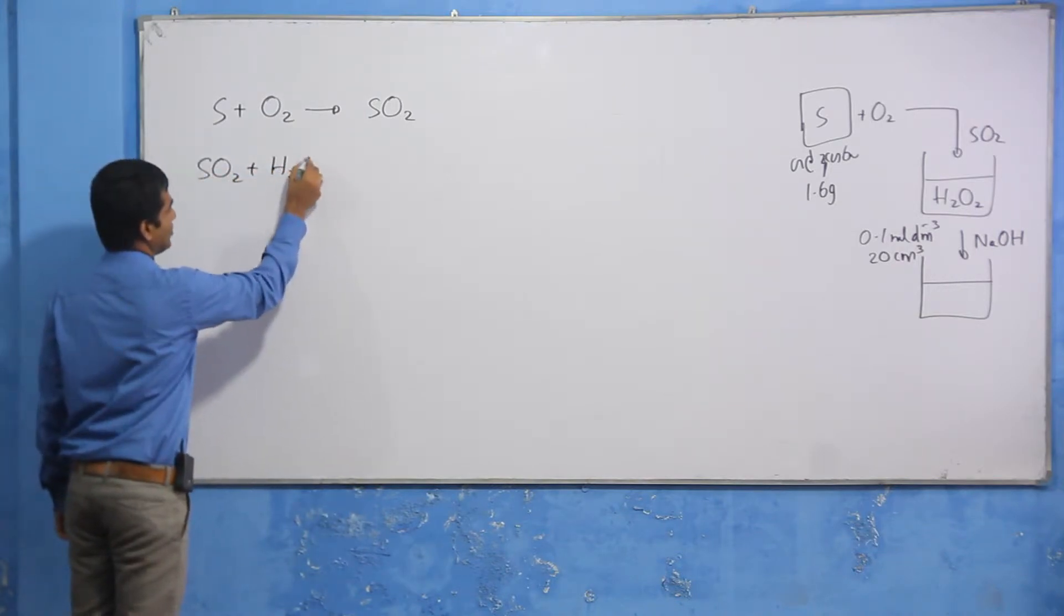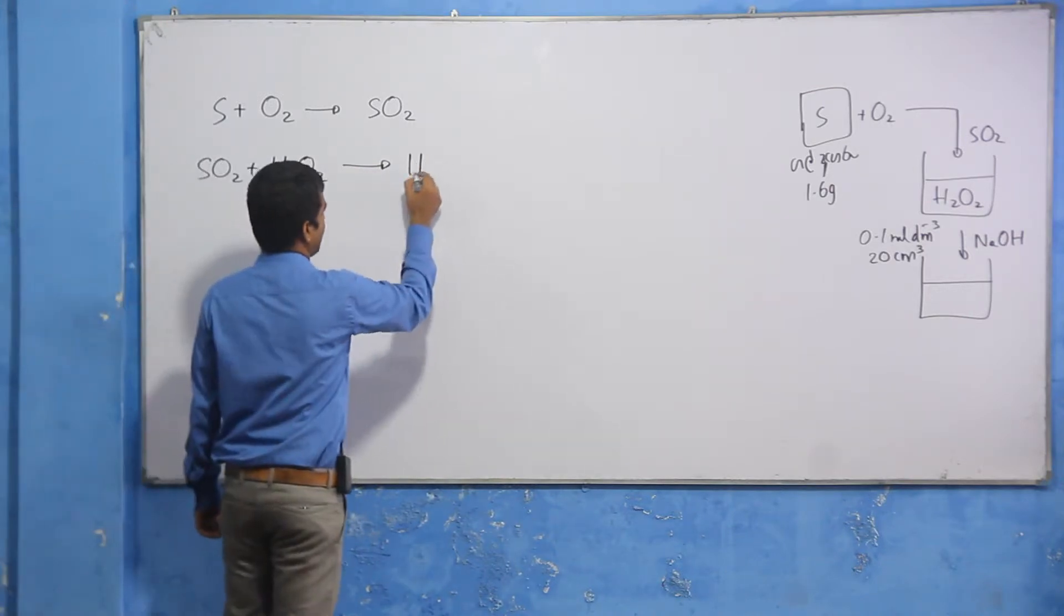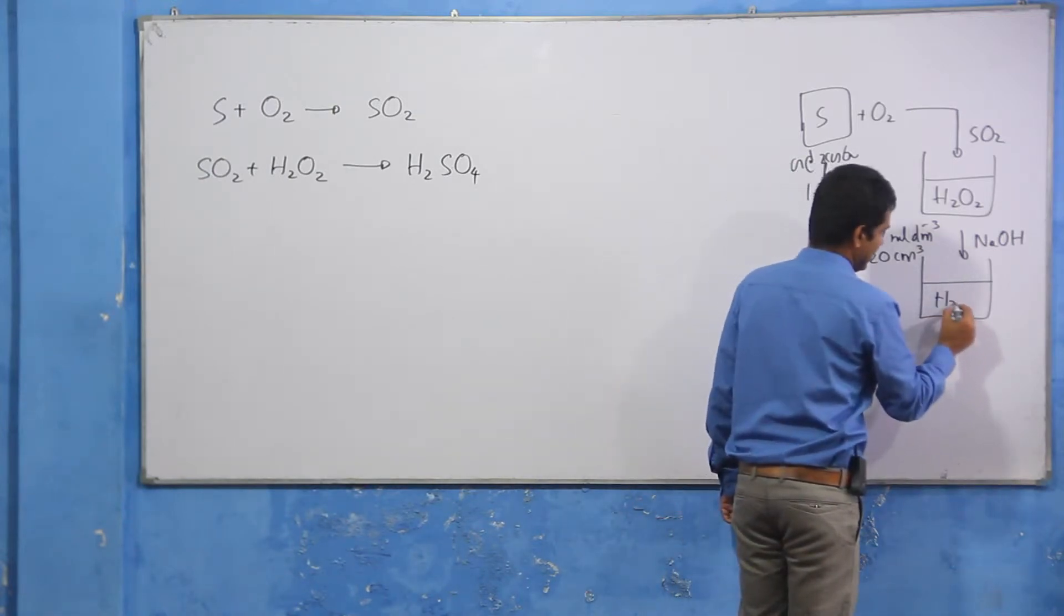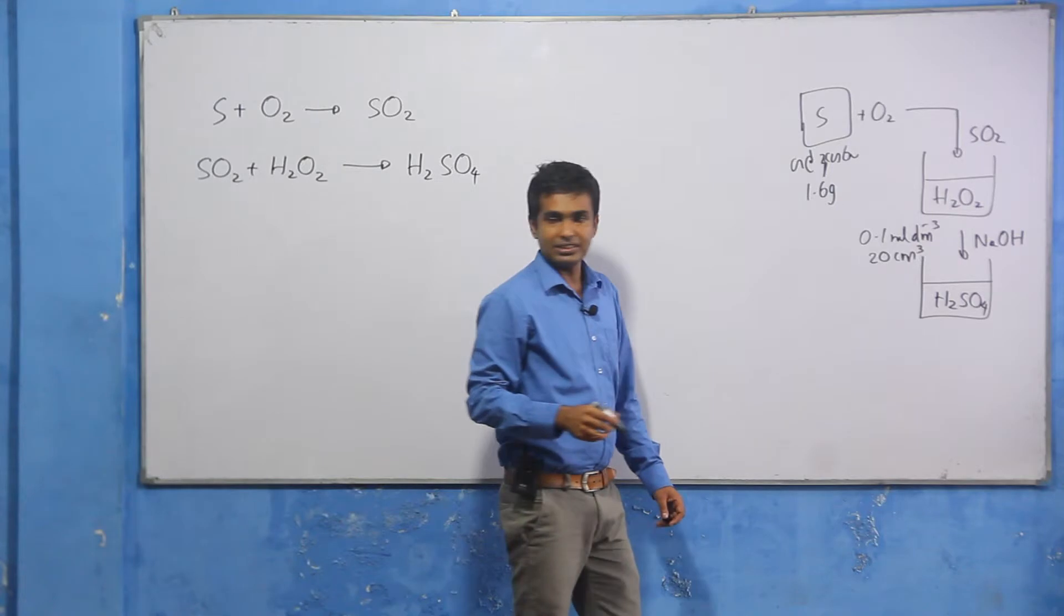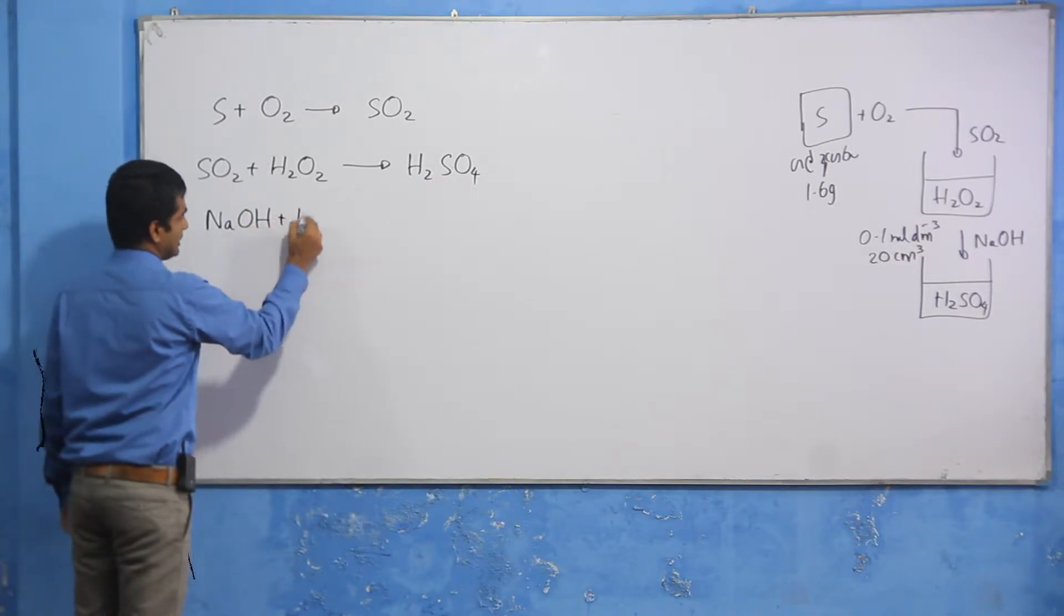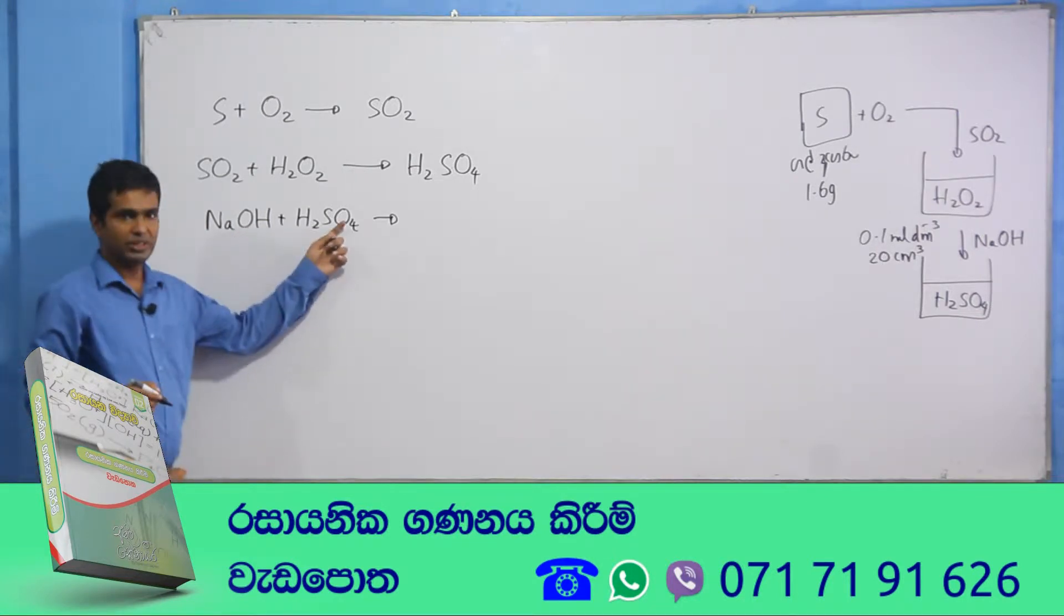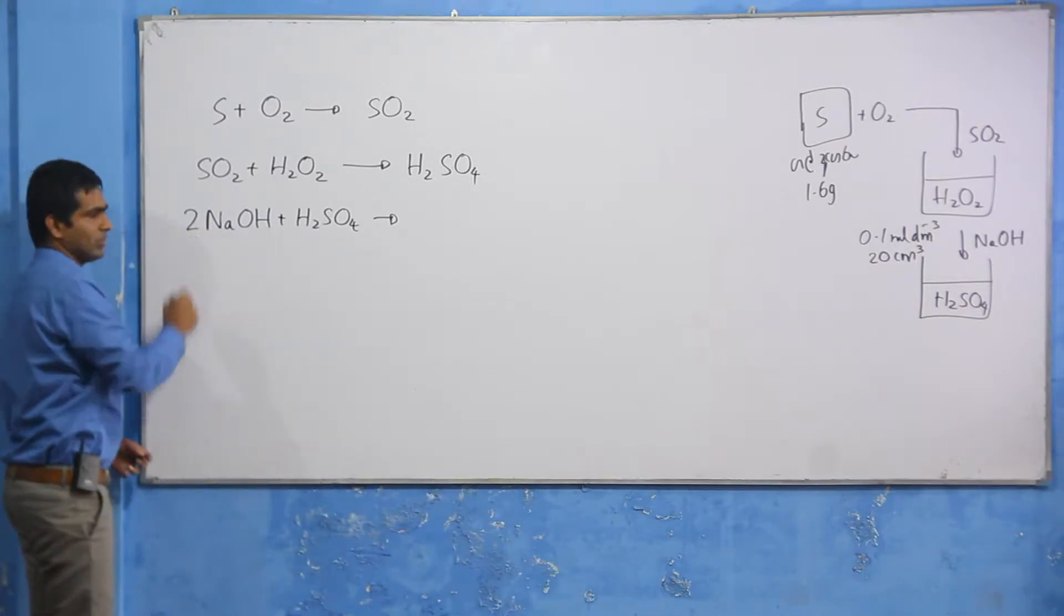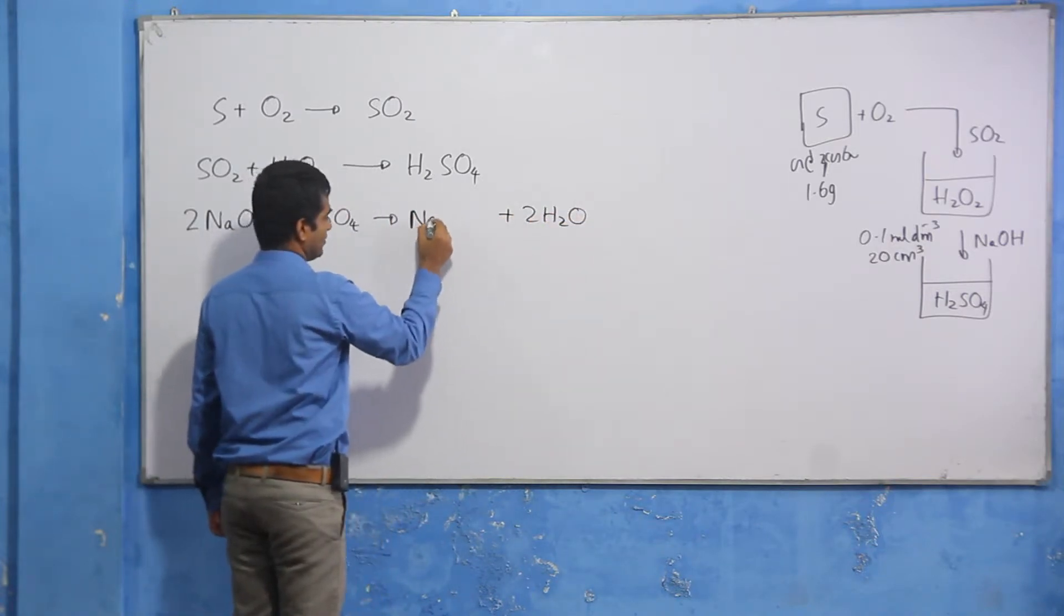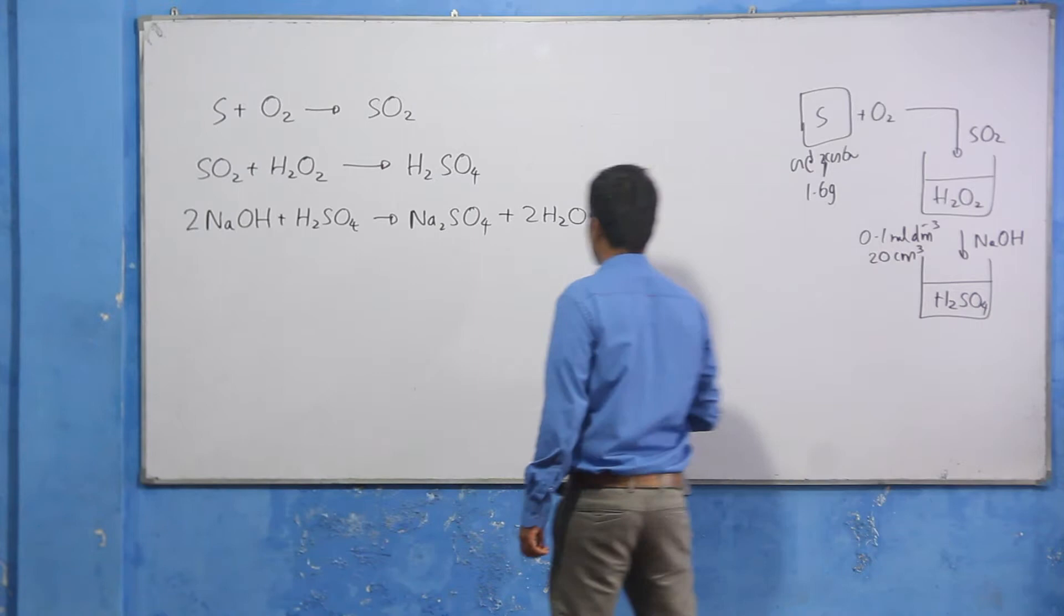Hydrogen peroxide reacts with sulfur dioxide. I'll do this reaction here. Sodium hydroxide is also particular. When sodium hydroxide reacts with sulfuric acid, it forms sodium sulfate. We're going to write sodium hydroxide and show this reaction.